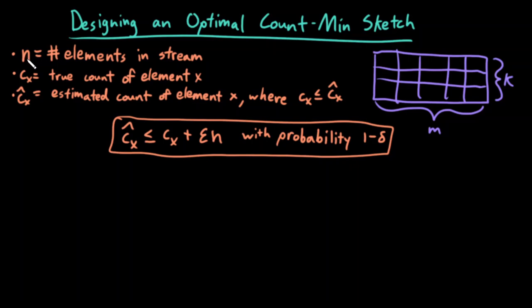Let me define some variables first. Let n denote the total number of elements in the stream. So whatever stream of data in which I'm counting elements, n is the total number of elements in the stream. Note that it's not the number of unique elements—it's the total number of elements, the sum of all of their counts.